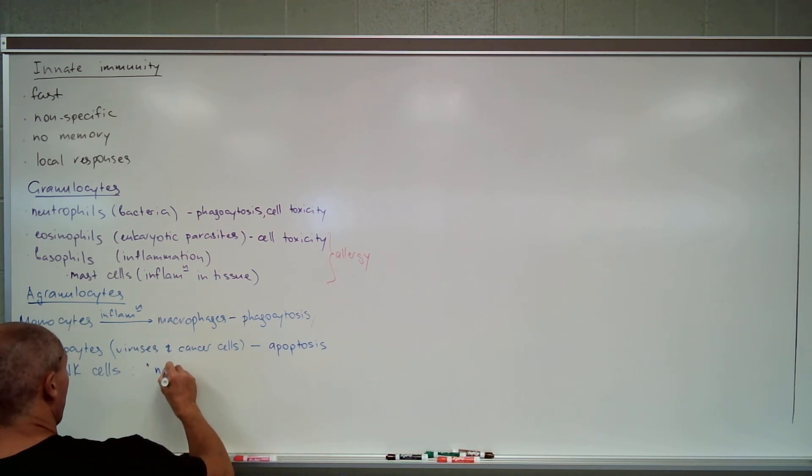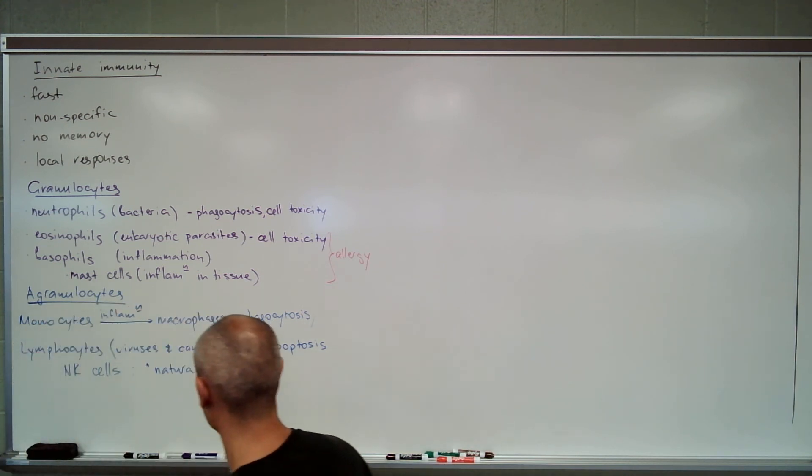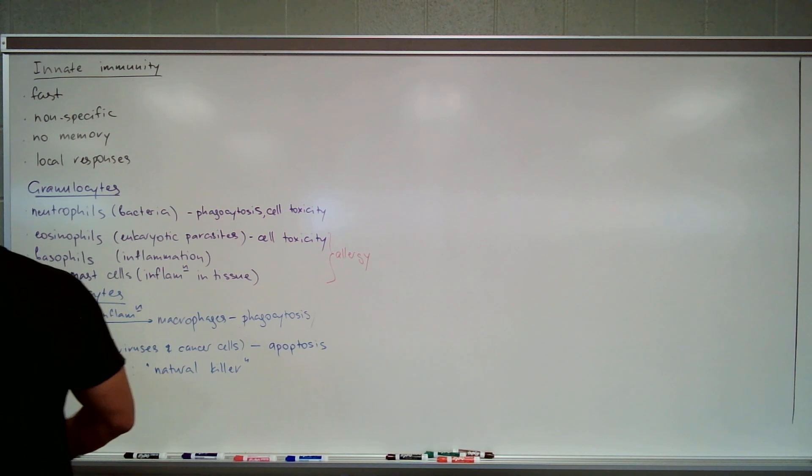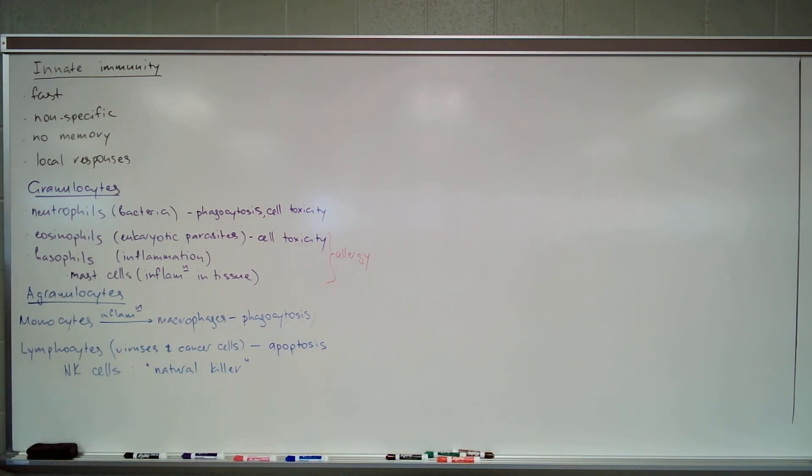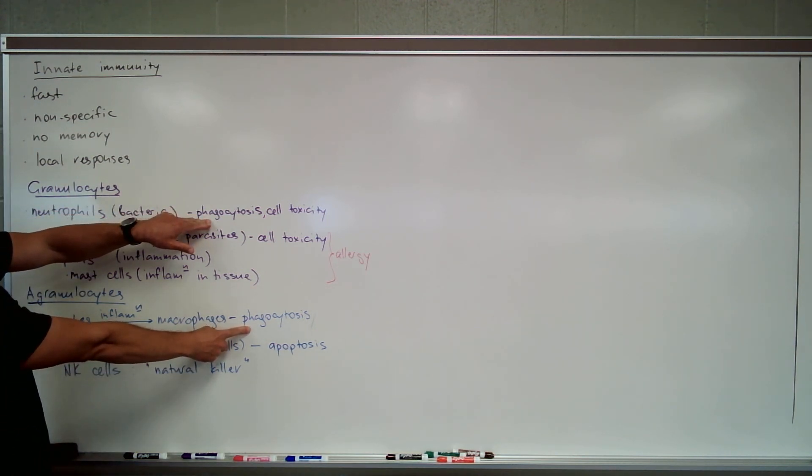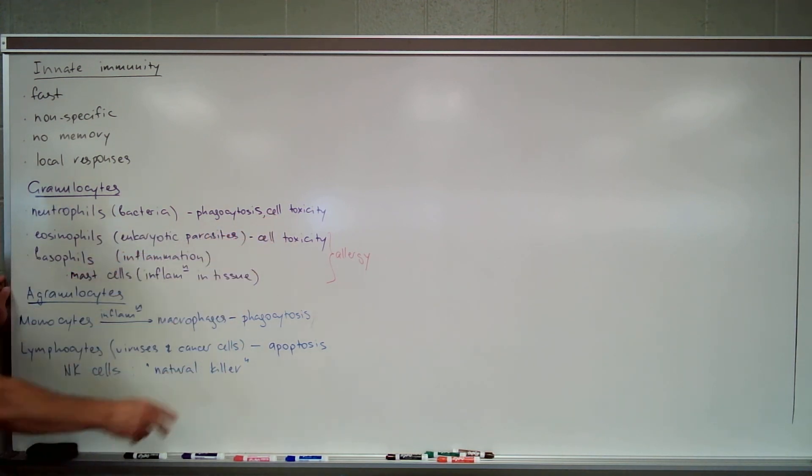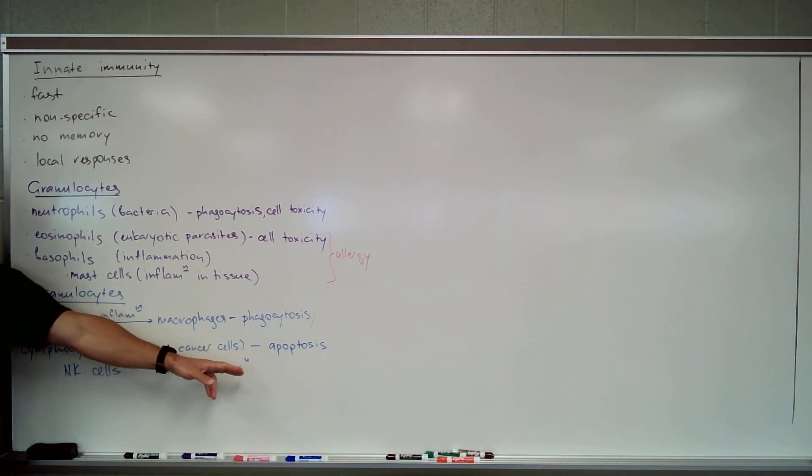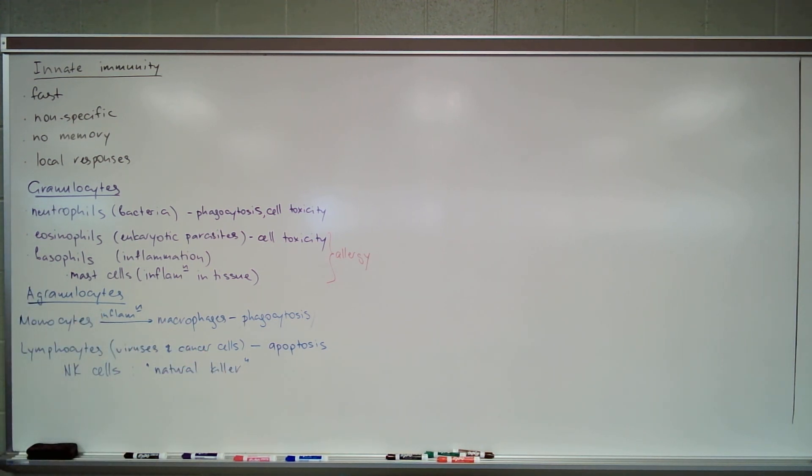NK stands for natural killer cells. So basically there are four big mechanisms for innate immune protection: phagocytosis, cellular toxicity, and specifically for NK cells, inducing apoptosis of either virus-infected or cancer cells. So far does that make sense?